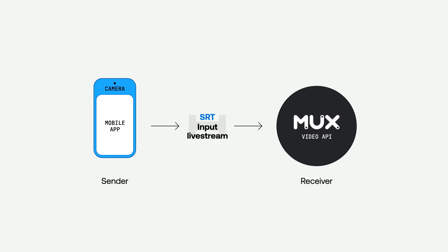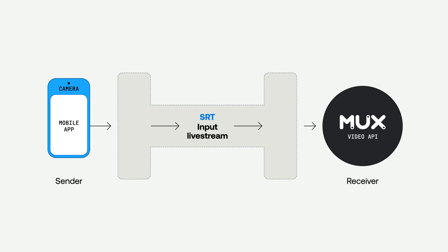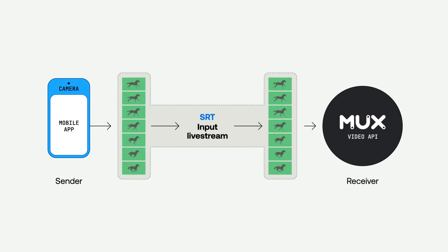Obviously, if some packets go missing — and some packets do occasionally go missing — SRT holds a buffer on both ends of the connection, and the size of this buffer is configurable when you connect to an SRT endpoint. For example, you have a second of frames on either end of the connection, and if some packets get lost or reordered, you can resend those lost frames to fill that gap in the buffer.